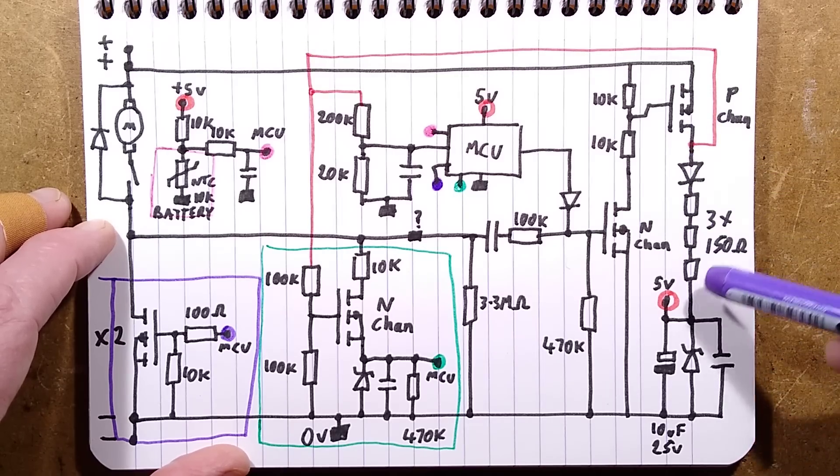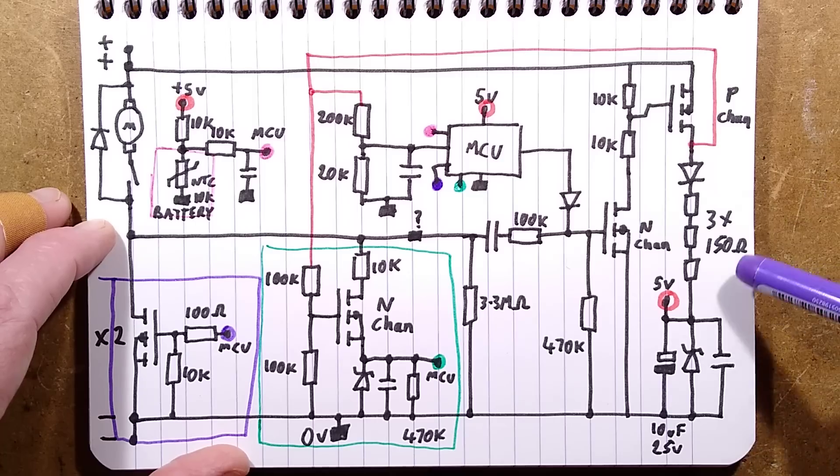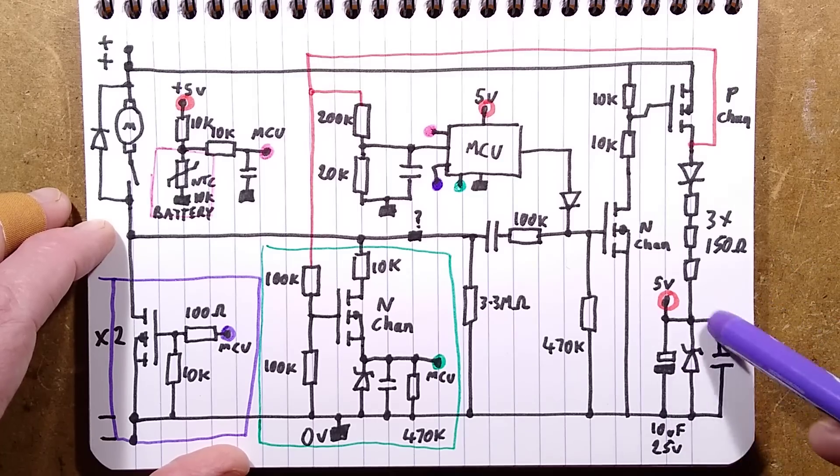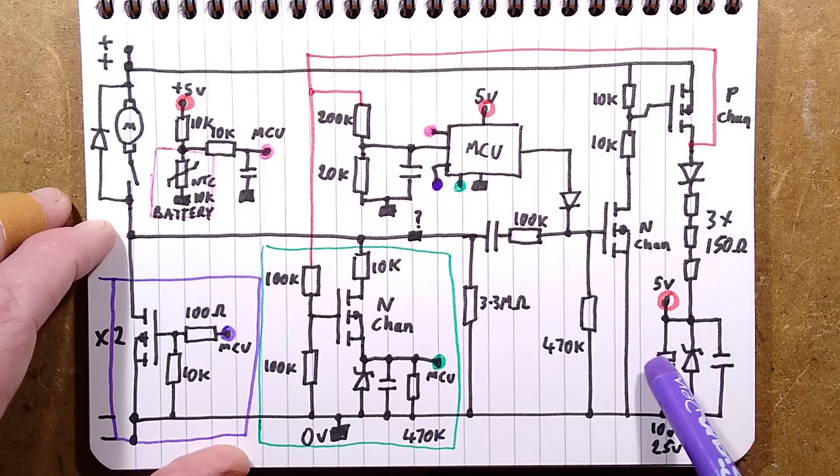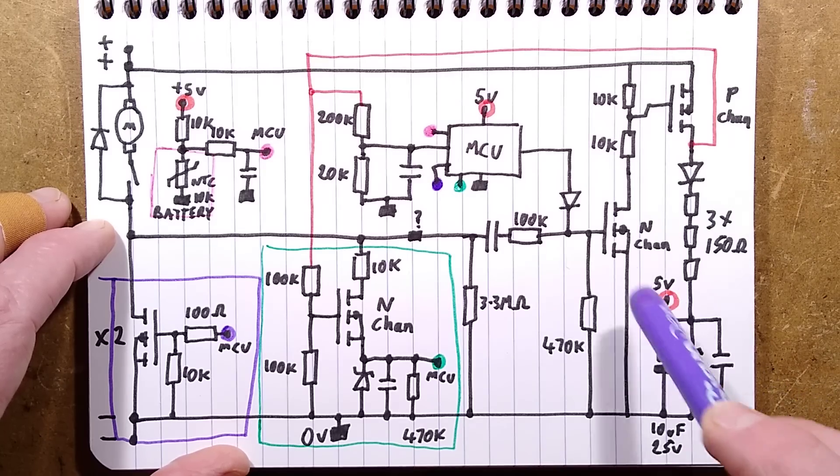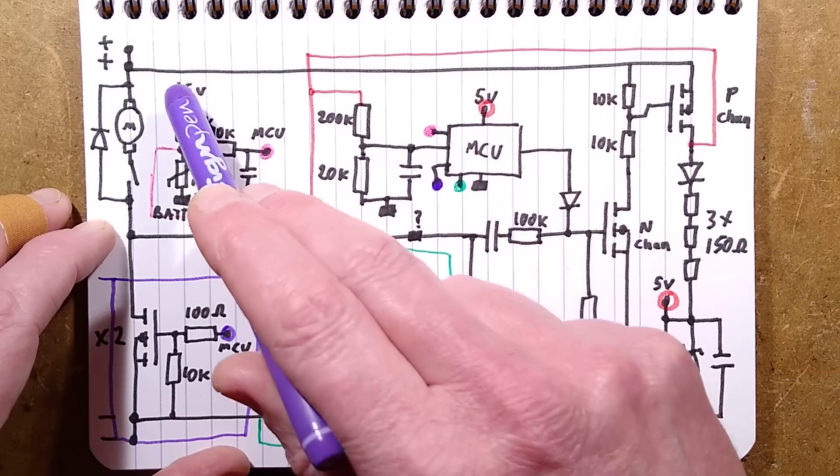The power for the five volts supply goes through this diode, through these three current limiting resistors, three times 150 ohm to spread the dissipation because it is simply a resistive dropper. Then that gets regulated roughly to about five volts by this zener diode with a couple of capacitors, and that then goes to the processor. But it also goes to the battery monitoring circuit.